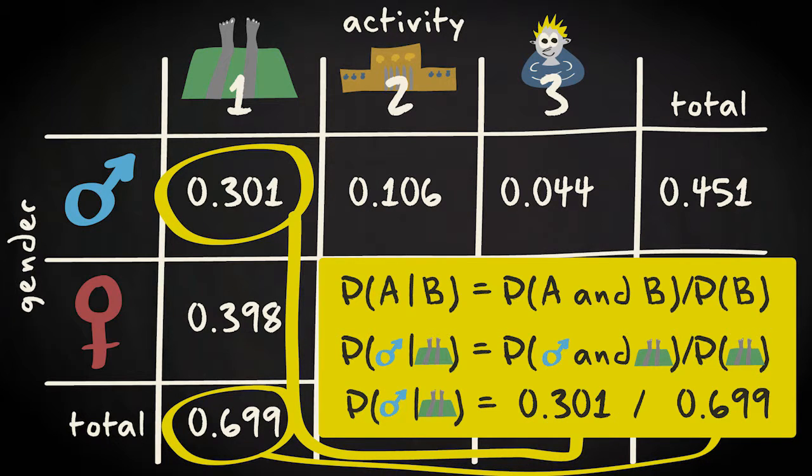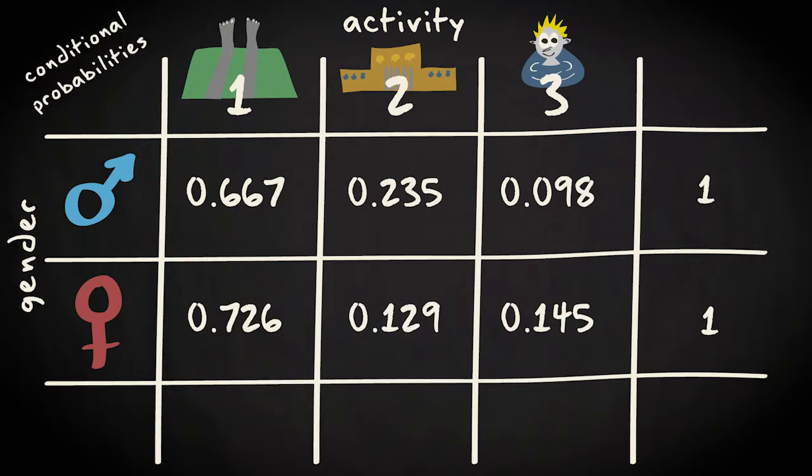Next, this should be done for the remaining five joint probabilities. This gives you the following six conditional probabilities.